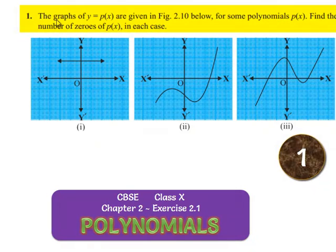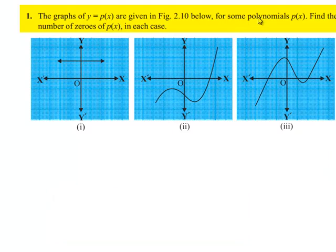Coming to the first problem: the graphs of y is equal to p of x are given in the figure below for some polynomials p of x. Find the number of zeros of p of x in each case.